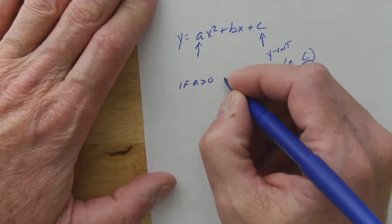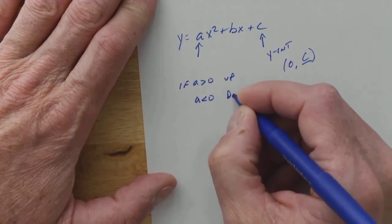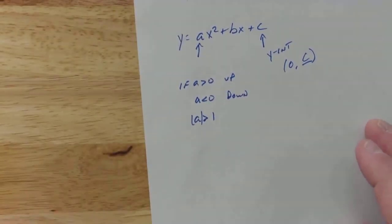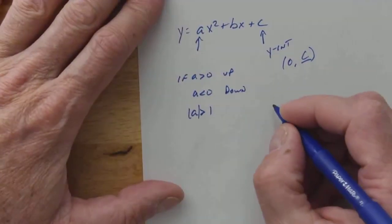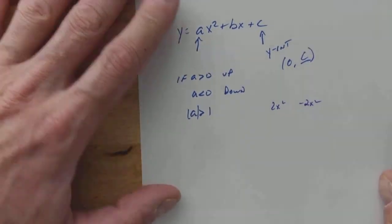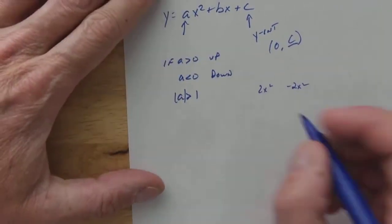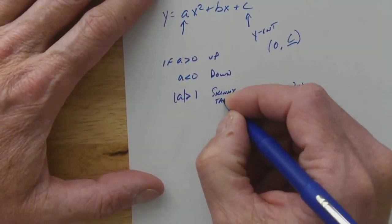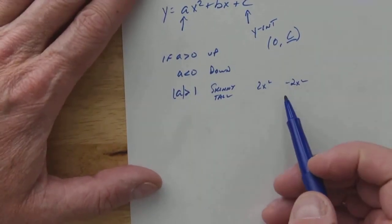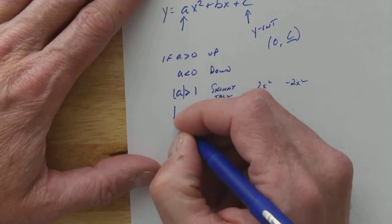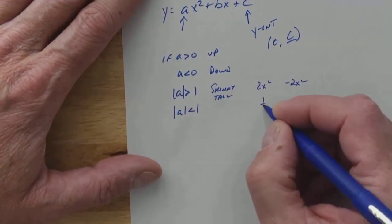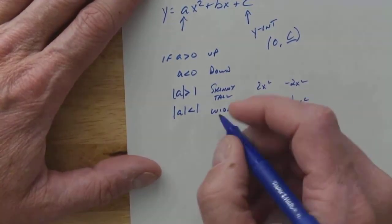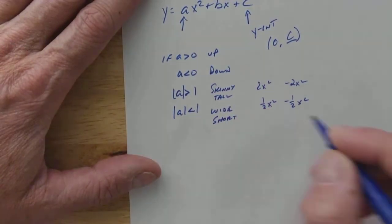So if a is greater than 0, it opens up. If a is less than 0, it opens down. If the absolute value of a is greater than 1, because I could have something like 2x squared or negative 2x squared, both those are skinny and tall. Or you can think of it as tall, like this one's going to be twice as tall. This one, absolute value of a is less than 1, so like 1 half x squared or negative 1 half x squared, they're both going to be wide and short.